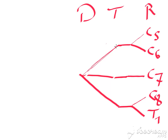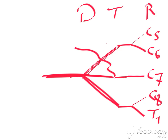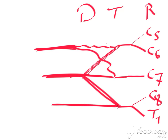All posterior divisions will form the posterior cord of the brachial plexus. The anterior division of the middle trunk with the anterior division of the upper trunk will form the lateral cord. Also the lower trunk's anterior division will complete as the medial cord.